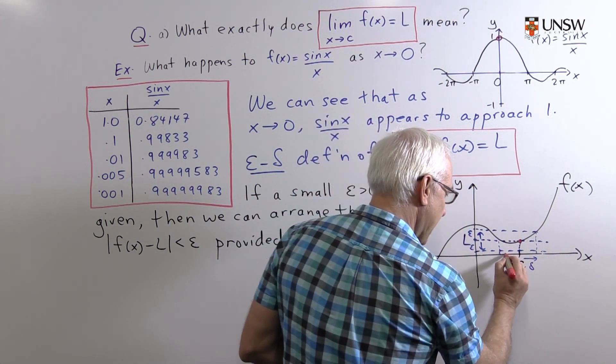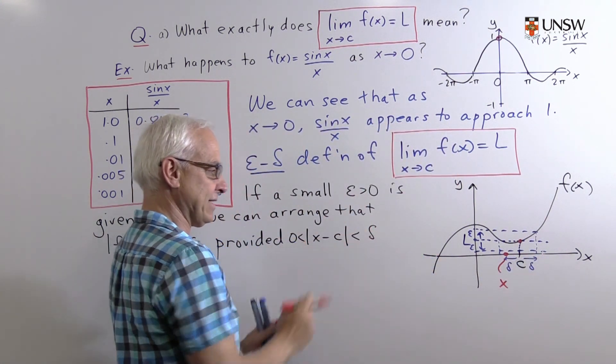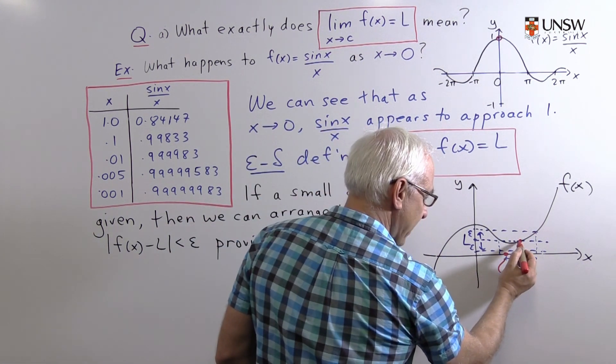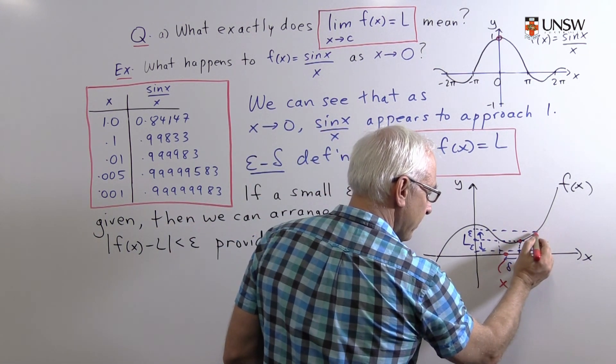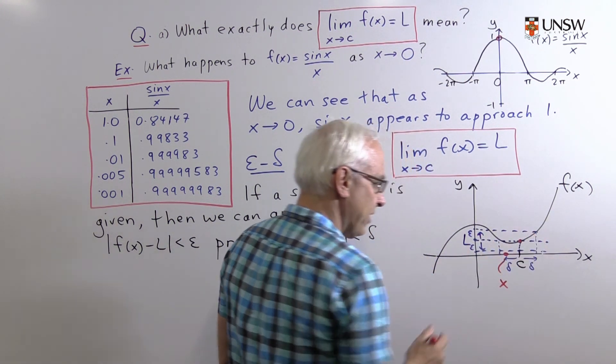So if we choose any x inside this interval where x minus c is less than delta, then in this case the function's values can only be between here and here, so it will be within this epsilon.